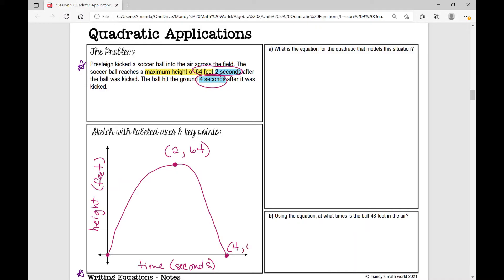We also know that the ball hits the ground four seconds after it's kicked. So four seconds after it's kicked, the ball has a height of zero. And obviously, we're going to start time zero, height zero.